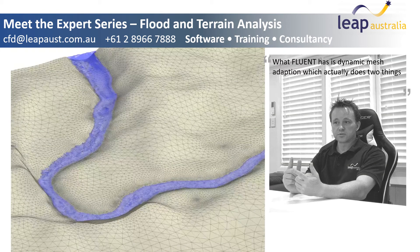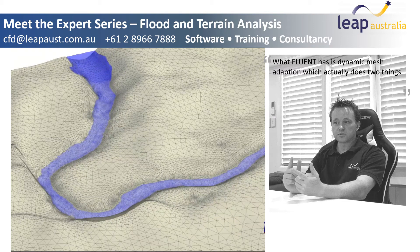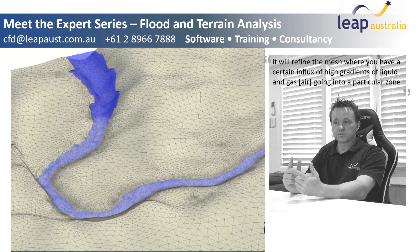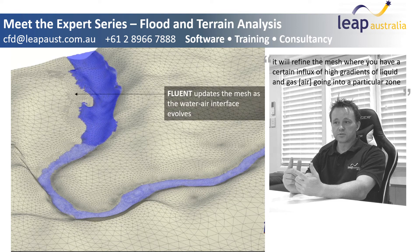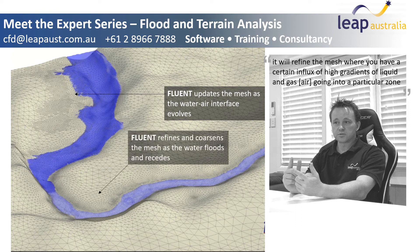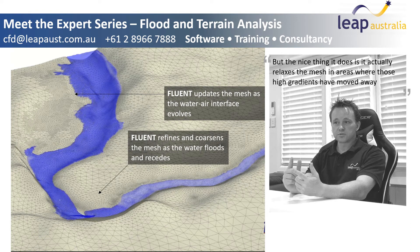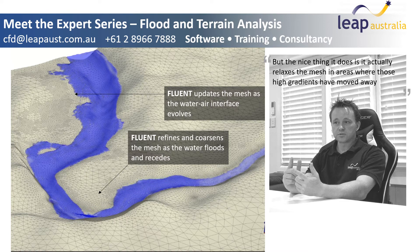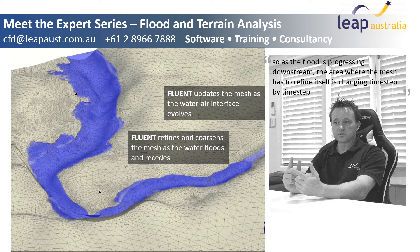What Fluent has is dynamic mesh adaptation, which does two things. It will refine the mesh where you have a sudden influx of high gradients of liquid and gas going into a particular zone. But it also relaxes the mesh in areas where those high gradients have moved away. So as the flood is progressing downstream, the area where the mesh has to refine itself is changing time step by time step.